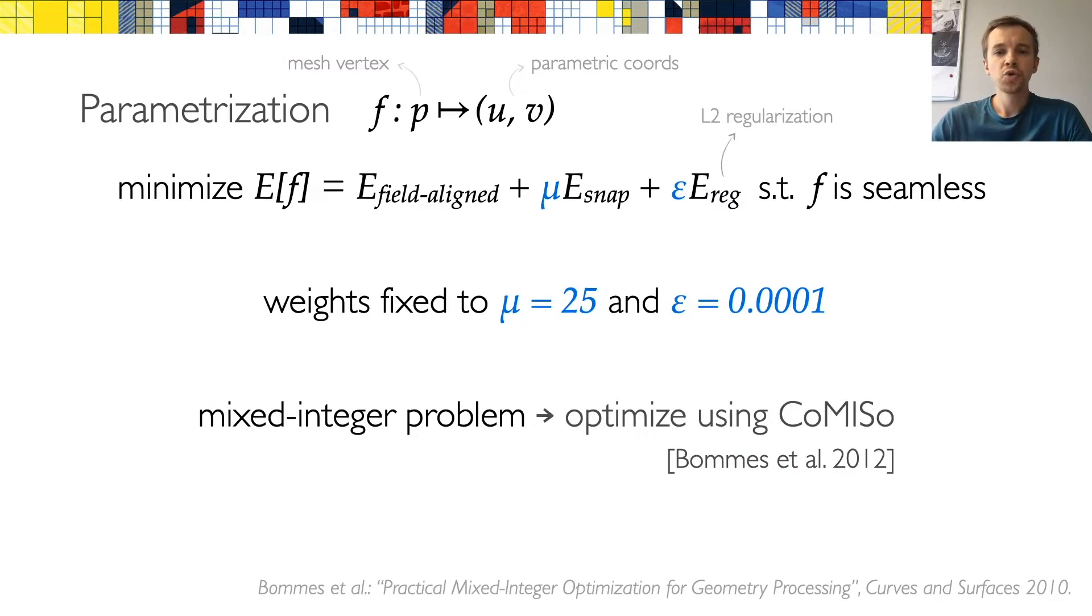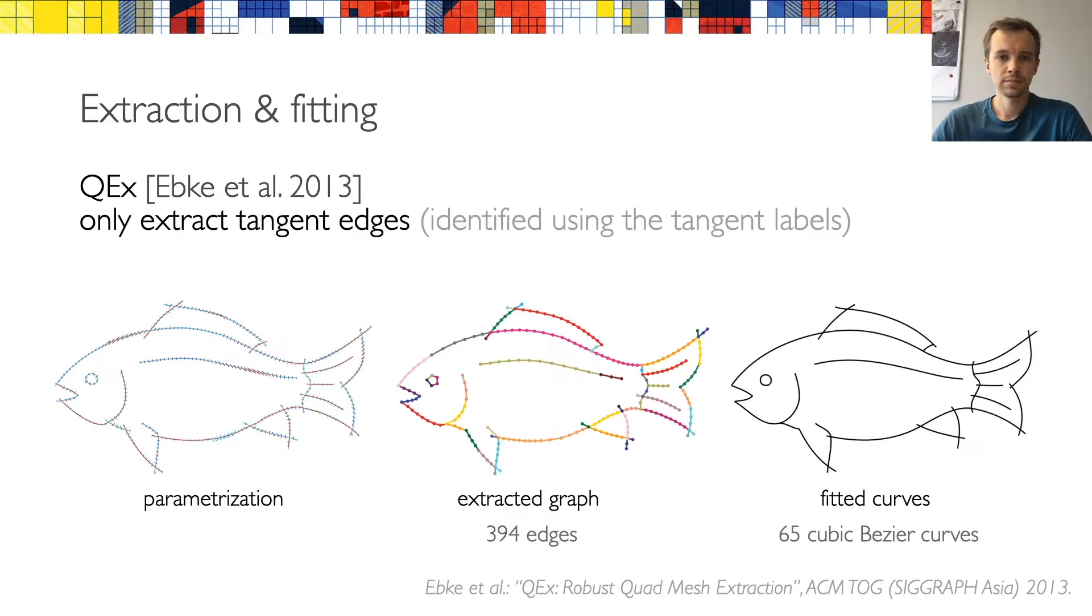So these were the two main energy terms in our parameterization energy. We use the weight 25 for the snapping term, which we found to work well in practice. Both the energy and the constraints contain integer variables, and we use CoMISo to solve this optimization problem.